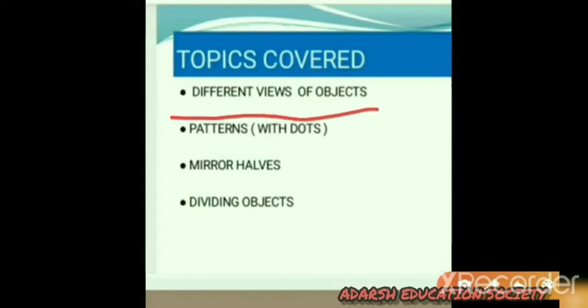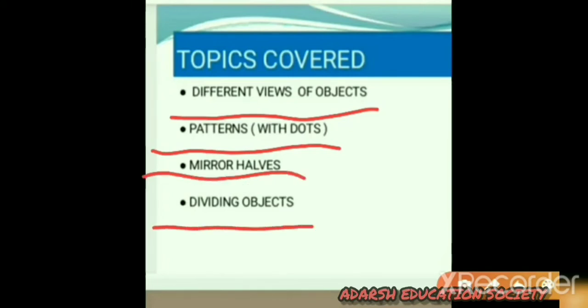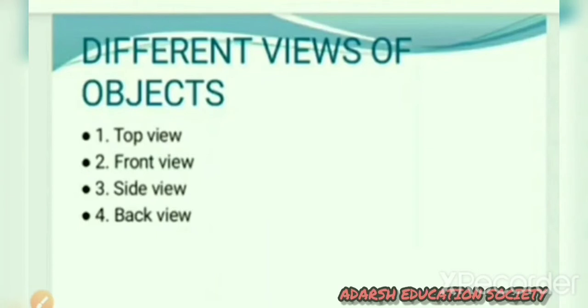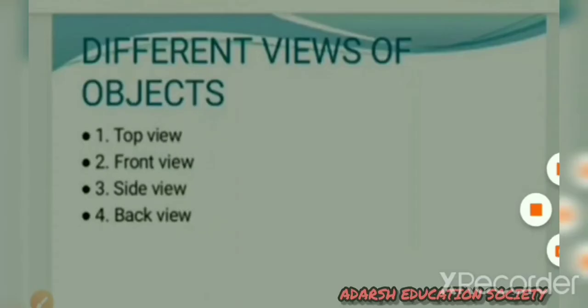Topics covered: different views of objects, patterns with dots, mirror halves, and dividing objects. Now, different views of an object. What is an object? An object is that material or thing which we can touch or see. There are four different views of an object. The first one is the top view.